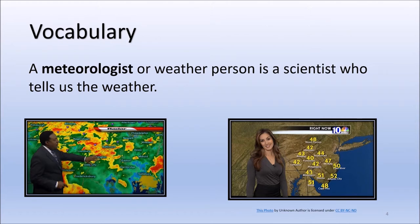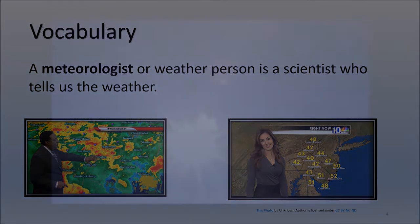A meteorologist, or weather person, is a scientist who tells us the weather. They use tools to collect weather data so they can discover the patterns which will help them predict what the weather is going to be. The weather is there every day.